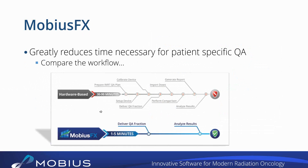With Mobius FX, this is all incredibly automatic and very fast. You deliver your fraction, the Mobius FX system automatically grabs the treatment logs, pulls those across, starts its calculation, and anywhere from 3 to maybe 10 minutes later — depending on server load and the type of plan — you get an email that your results are available. Then you go into the interface and analyze the results. Very fast, very efficient — you don't have to go through all the setup that you need to in the typical way of doing patient-specific QA.